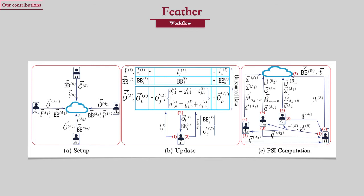As this flowchart indicates, in the setup phase each client prepares and uploads its set to the cloud server without needing to interact with other clients. In the update phase, a client sends only a single message to the server and receives two vectors — the contents of a single bin in the hash table. After updating the two vectors, it sends them back to the server, which replaces the bin's content with the new one.